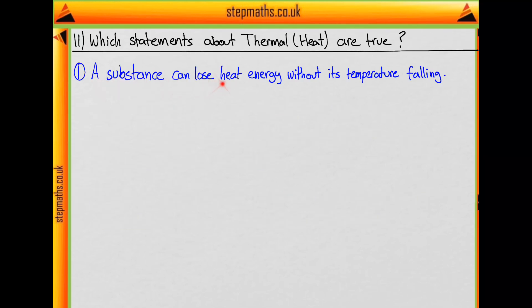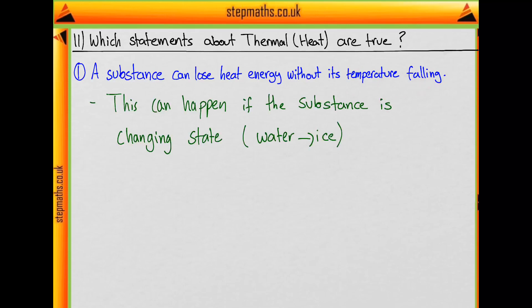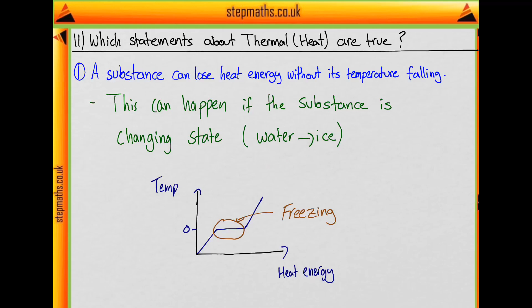Statement 1: a substance can lose heat energy without its temperature falling. This can happen if a substance is changing state. An example would be water freezing into ice. You can see this on a temperature-energy diagram of water freezing into ice, where there is a flat section where the temperature is constant whilst heat energy is being lost — this is when the water is freezing.